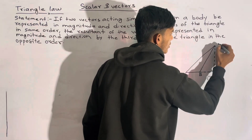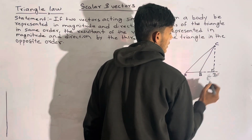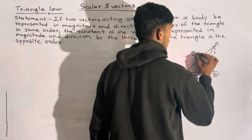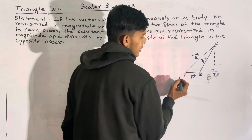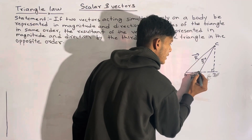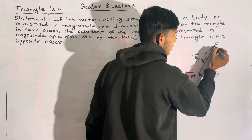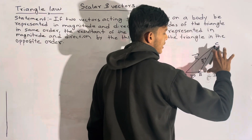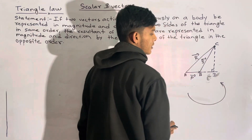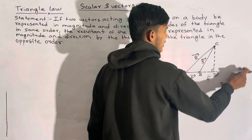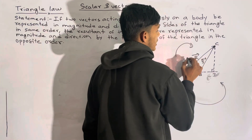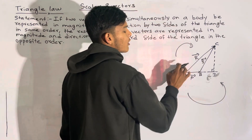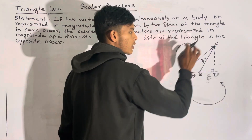A means B, C means 90 degrees. This is the P vector, this is the Q vector, and this is the R vector. According to the direction we have allocated, clockwise in general is anti-clockwise.